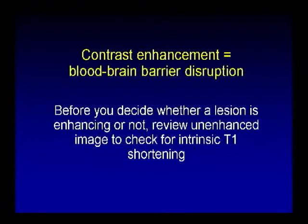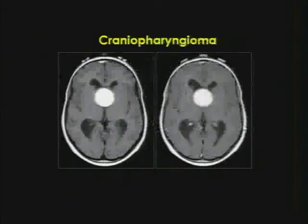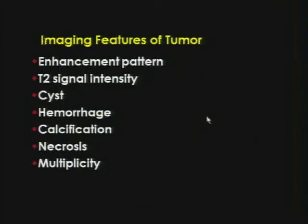Another important point: before deciding something is enhancing, always look at pre-gadolinium imaging. Here's a child with a presumed pilocytic — the post-gadolinium imaging looks like a typical suprasellar homogeneously enhancing mass. But the pre-gadolinium imaging reveals this is actually a craniopharyngioma containing proteinaceous fluid. Never evaluate post-gadolinium imaging alone without knowing the pre-gadolinium appearance.